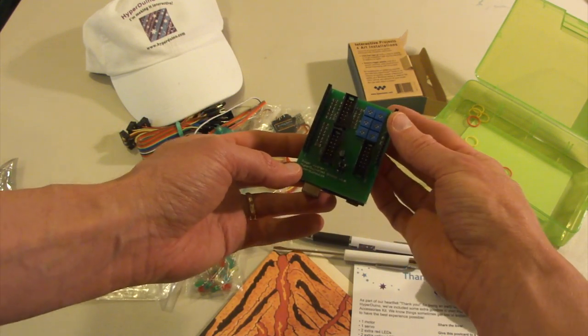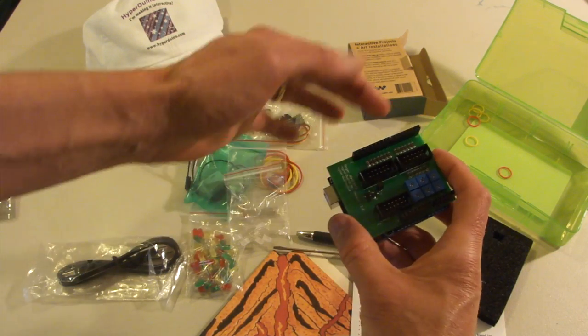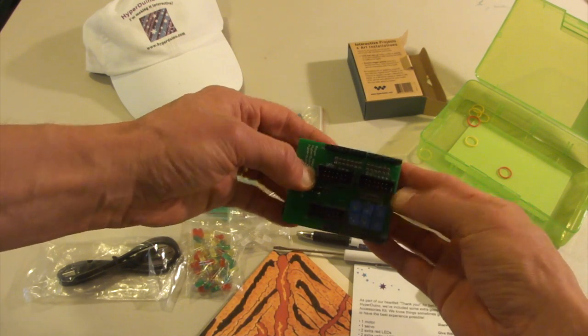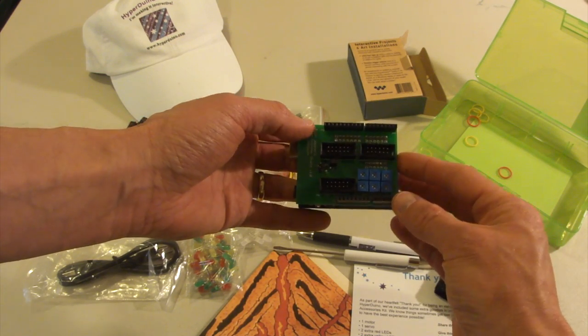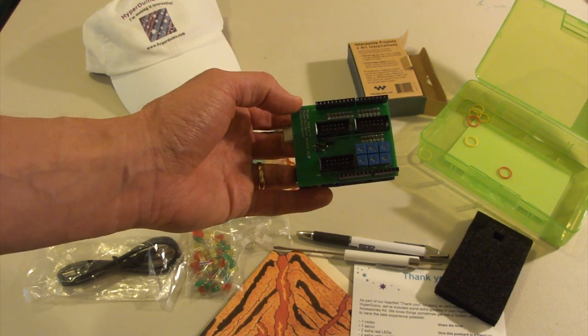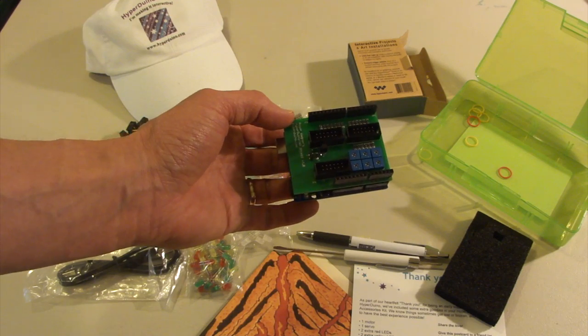And so the Hyperduino shield, what that really is, is it's essentially all the same pins as are on the regular Arduino. But in between each pin is a resistor that goes from the pin to ground. And so this makes it really easy to add LEDs to the Hyperduino. You don't have to wire up resistors or anything separately.